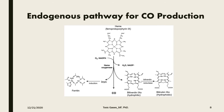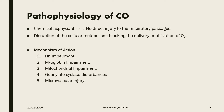This graph shows, just to remind you, the endogenous pathway for carbon monoxide inside the body. As you can see, it is the last step from protoporphyrin metabolism inside the body where carbon monoxide is produced. The pathophysiology of carbon monoxide poisoning — as mentioned, it is a chemical asphyxiant, so there is no direct effect or injury through the respiratory passages. It causes disruption of cellular metabolism and blocks the delivery or utilization of oxygen at the tissue level.